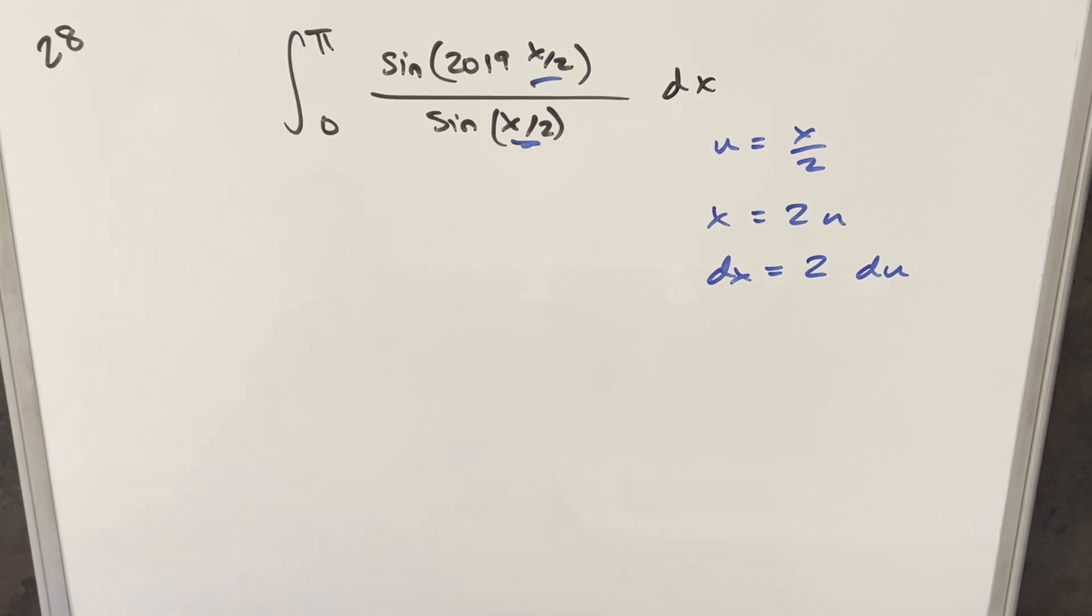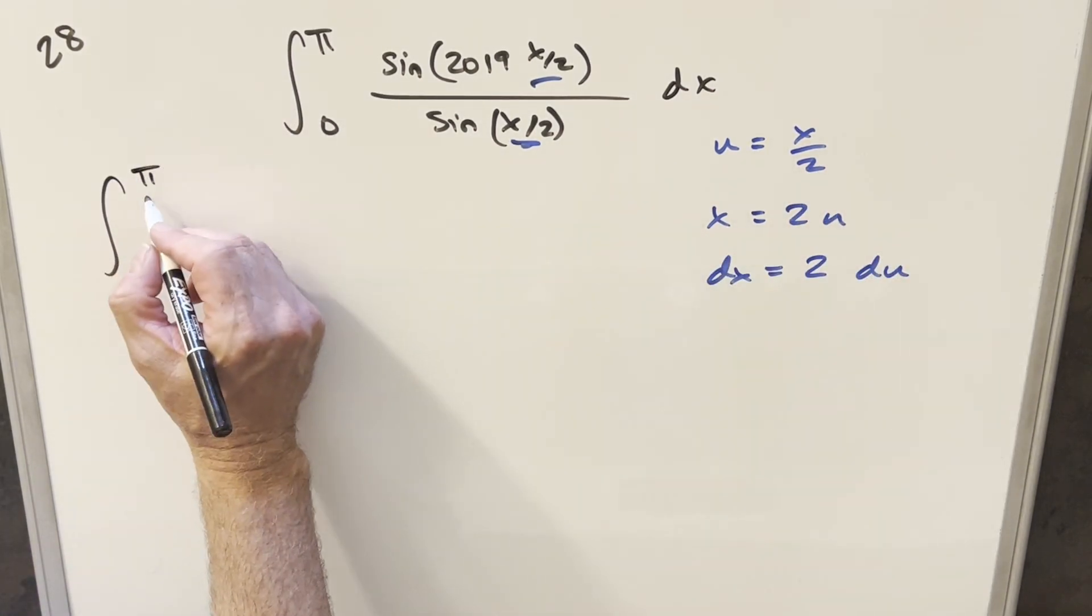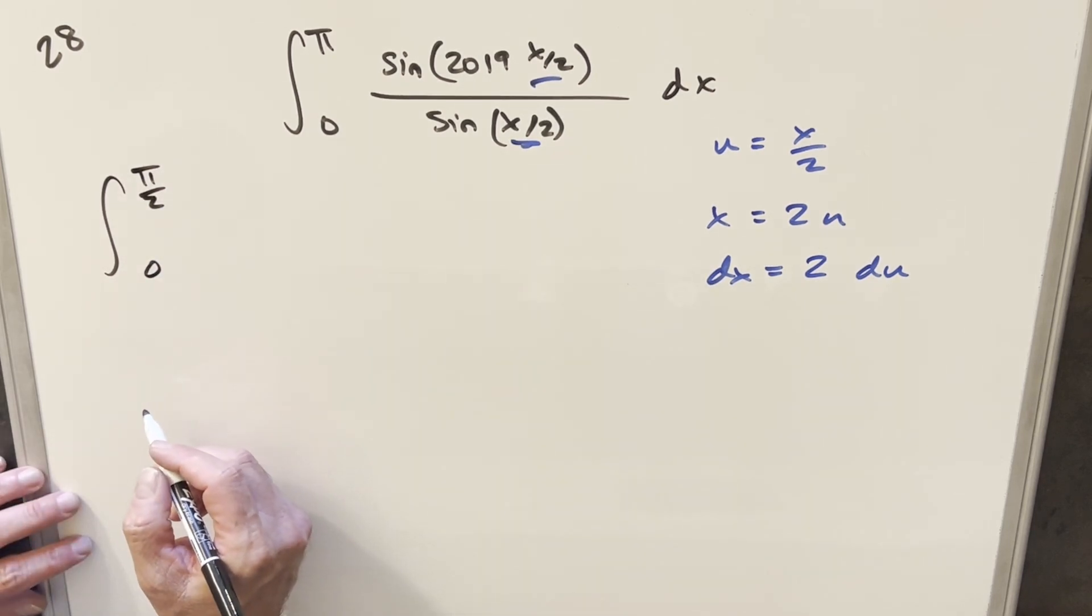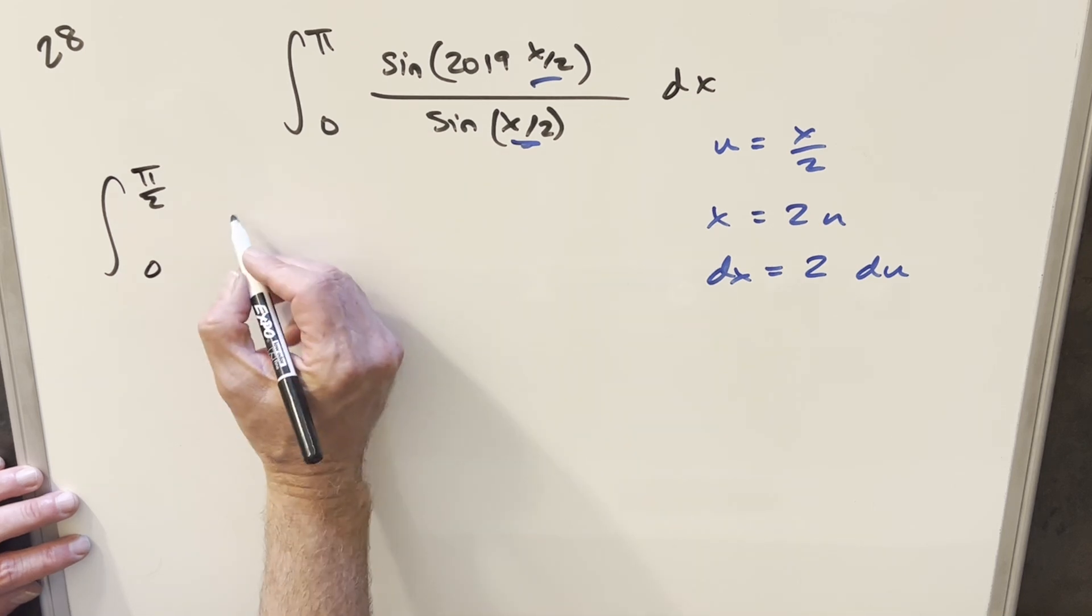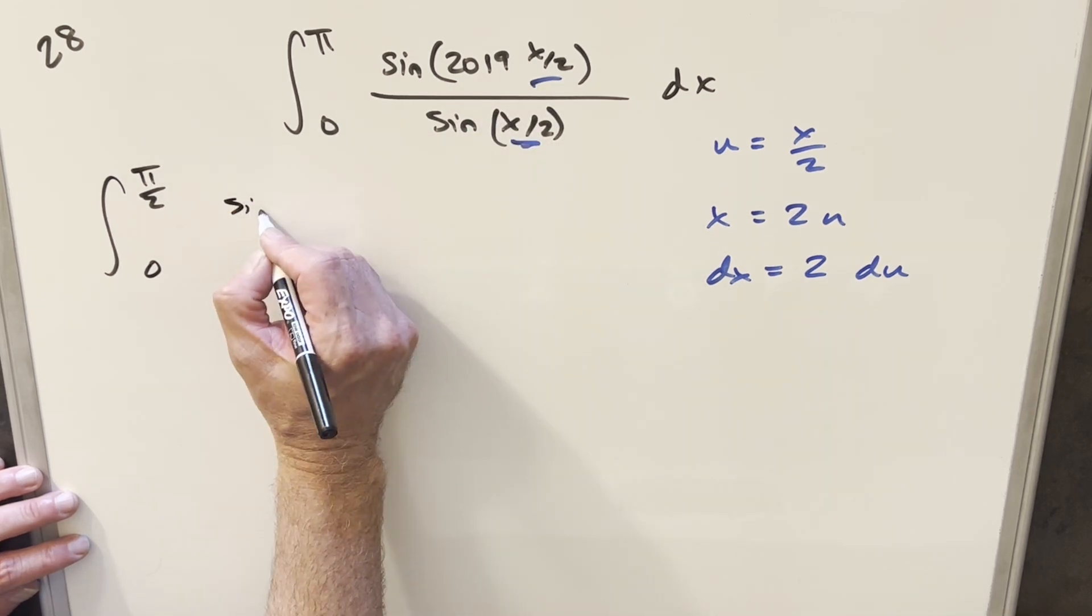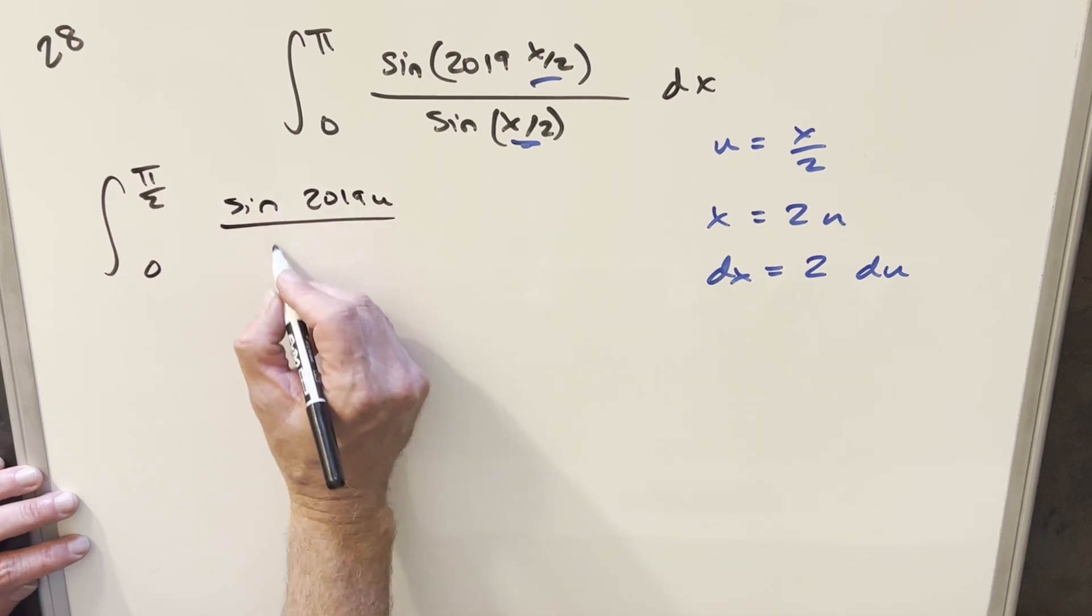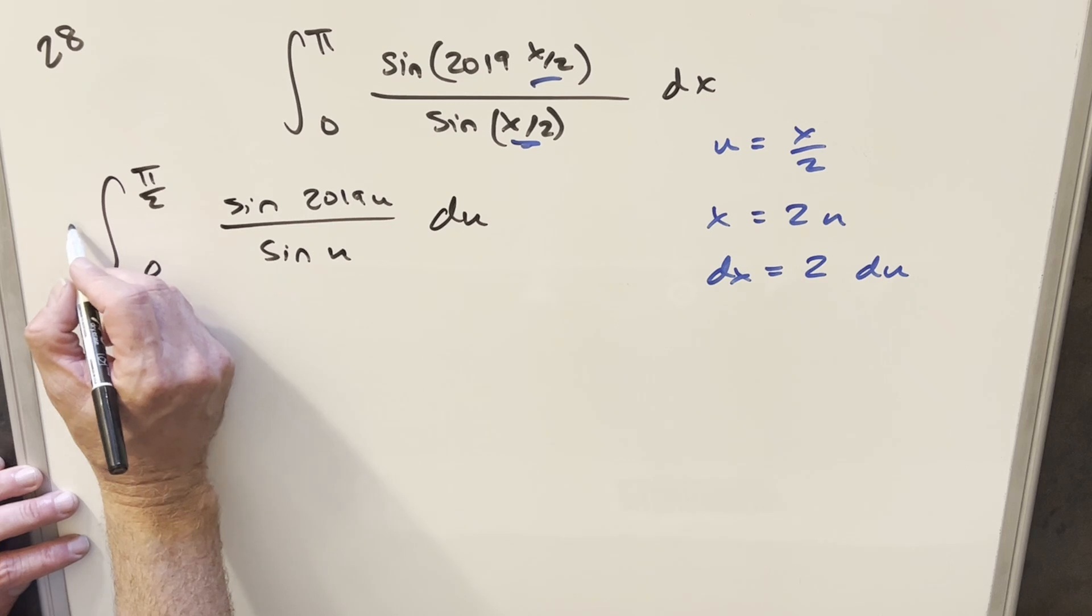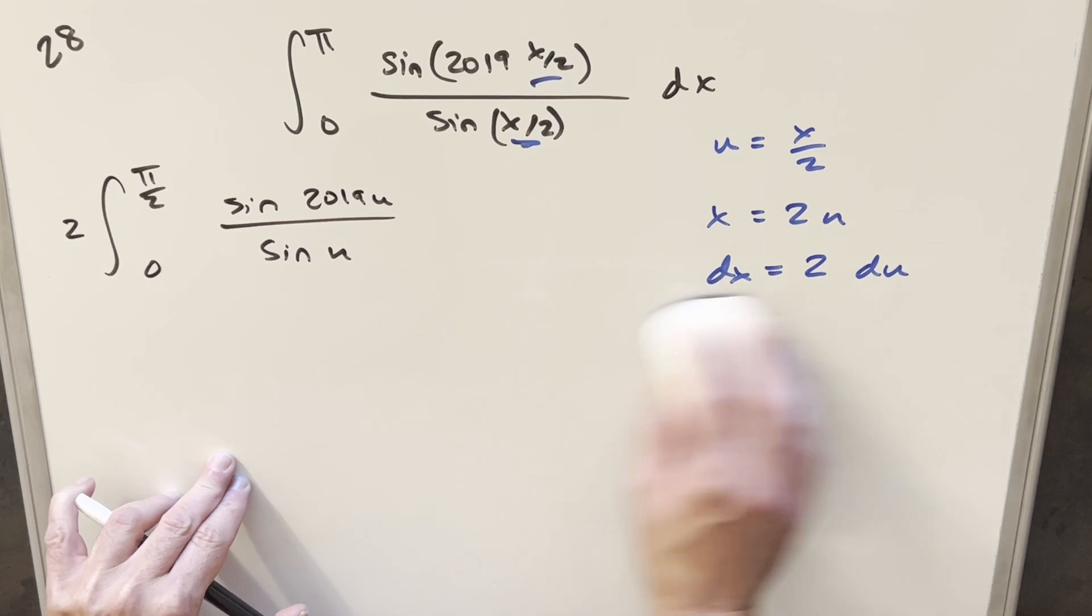So we'll do the substitution here. First we'll plug in our upper bound pi, which gives us pi over 2. Plug in 0, we still have 0. We're really just cleaning up the x over 2, so on the numerator it's going to become sine 2019 u, and then here this is going to become sine of u. For the 2 on the du, let's just bring that up front of the integral.